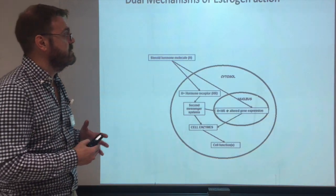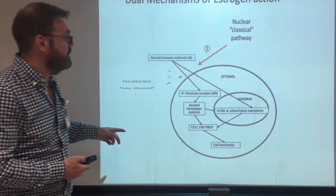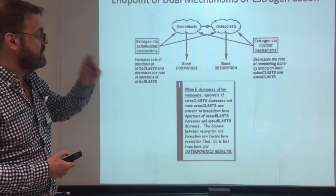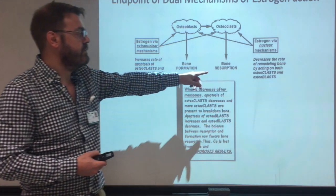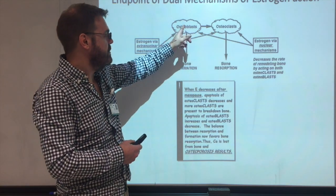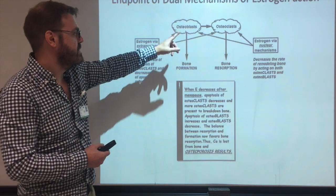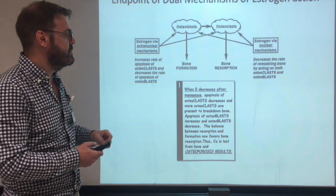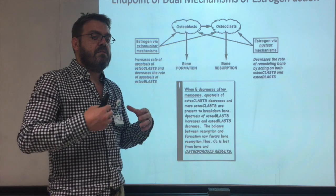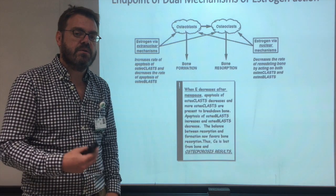This is due to the dual mechanisms of estrogen's action: the classical nuclear pathway and the non-classical extranuclear pathway. The nuclear mechanism decreases the rate of remodeling by acting on both osteoclasts and osteoblasts, while the extranuclear mechanism mainly works on osteoblasts and keeps osteoclasts alive. Because of this, when there is not enough estrogen, osteoclasts win out, bone degradation increases, and the result is osteoporosis — particularly in the aging female post-menopause, though it also occurs in men.